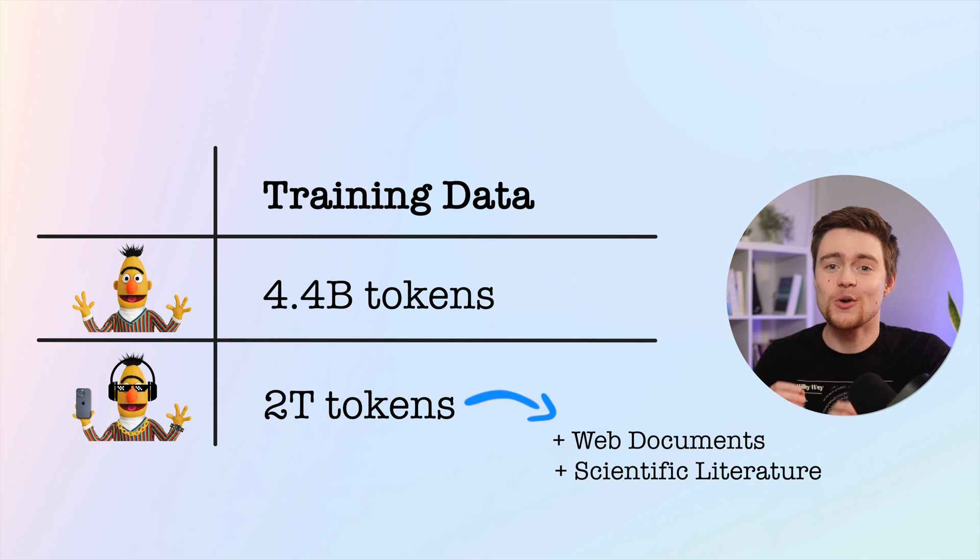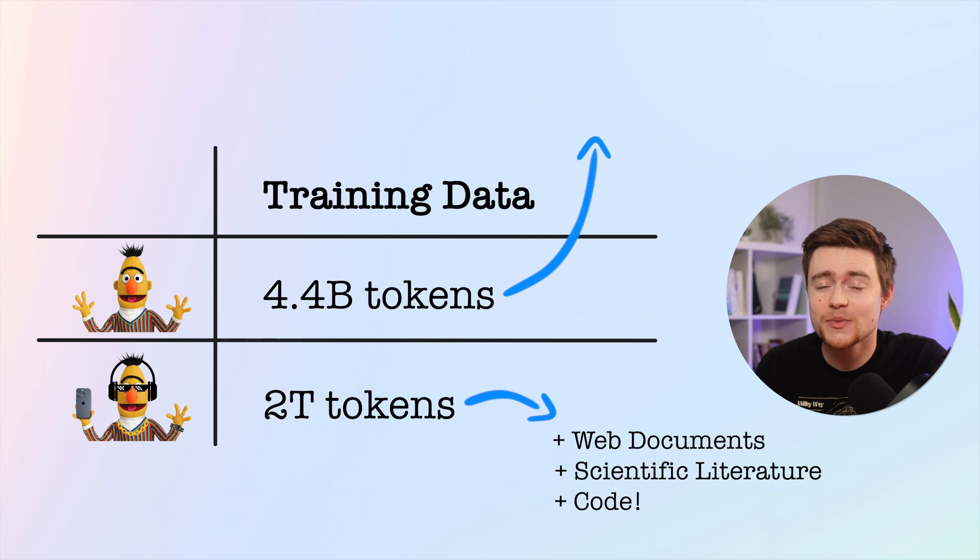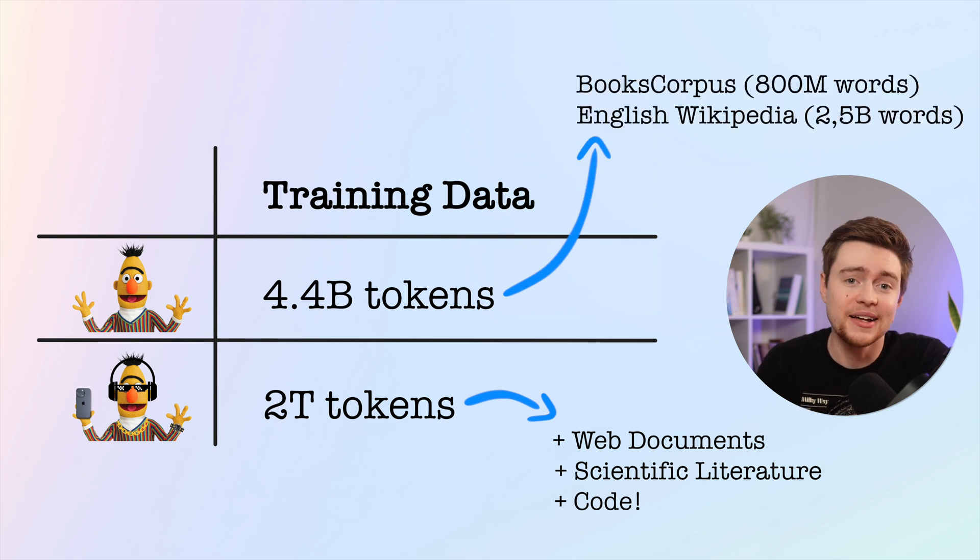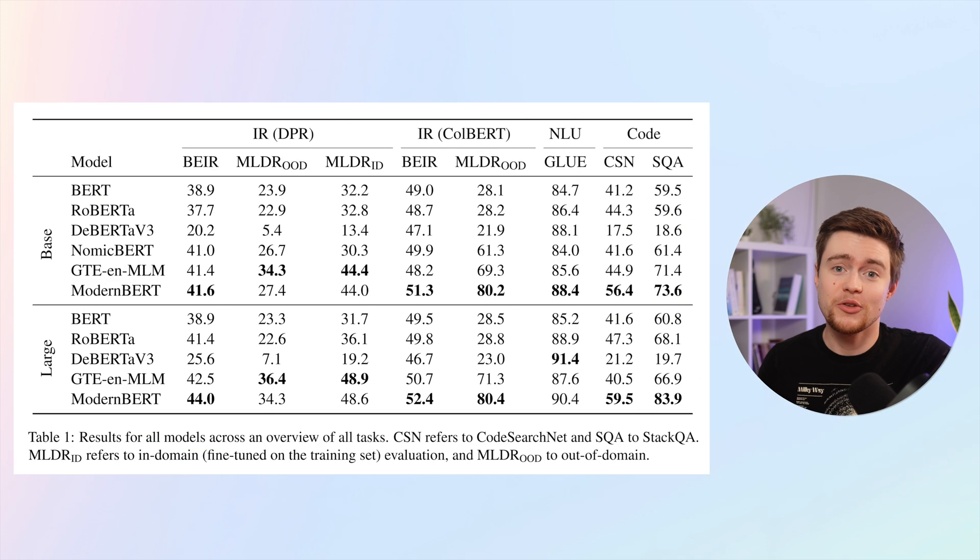Adding code to training is huge. Previous models were mostly trained only on textual data, and that highly limits their performance on code-related tasks - for example, if you want to use them for AI coding assistance. Clearly it works, because when we look at the reported benchmarks, Modern BERT is outperforming on code tasks by a large margin.